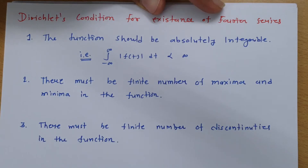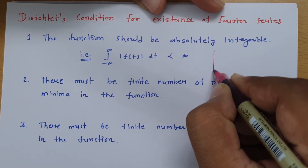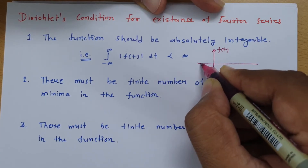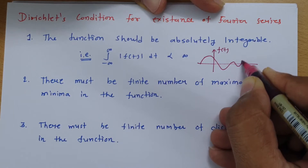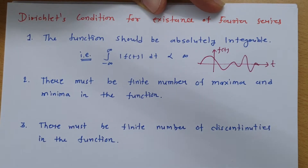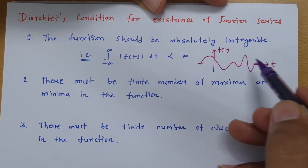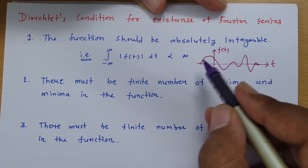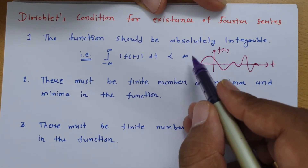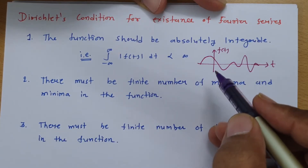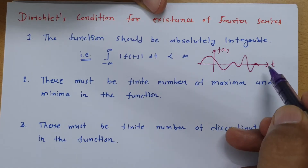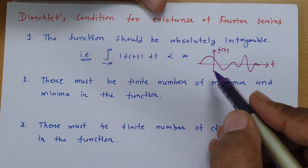Let me give a simple example. Suppose I have a signal f(t) that looks like this. For this function, it should be absolutely integrable — when you integrate it, it should have a finite value, less than infinity. When you calculate this integration, meaning the area under the curve with respect to time, it should be finite.